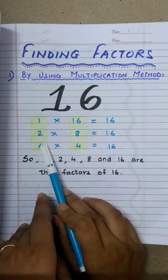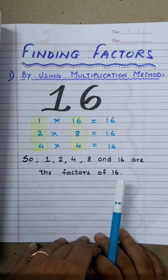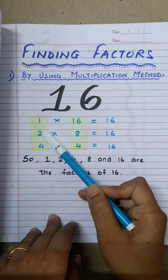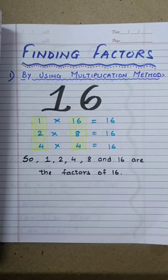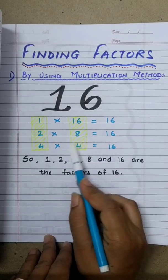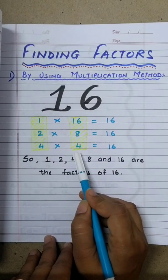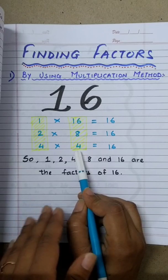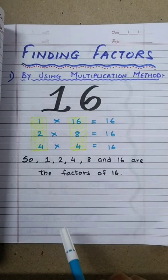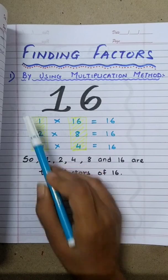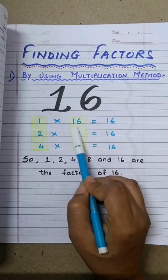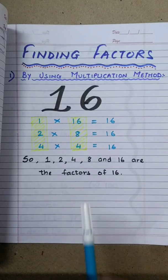The numbers in these two rows are the factors. So, 1, 2, 4, 8 and 16 are the factors of 16. We did not go to 5 because number 4 is repeated over here. So, we don't need to go further. Always remember, the smallest factor of any number is 1, and the biggest factor of any number is the number itself. So, 1, 2, 4, 8 and 16 are the factors of 16.